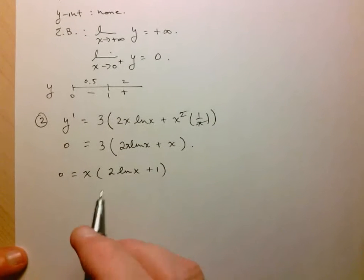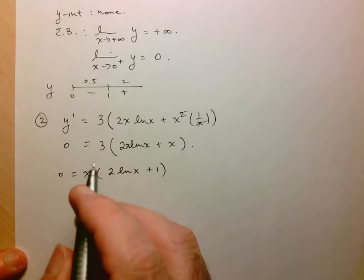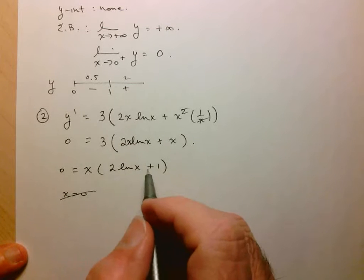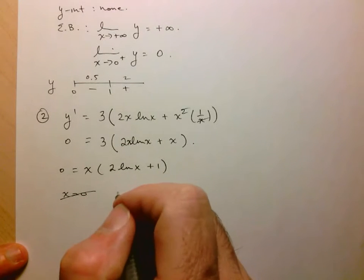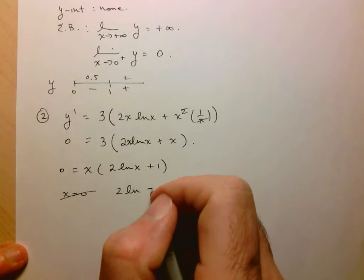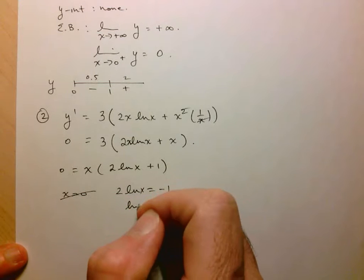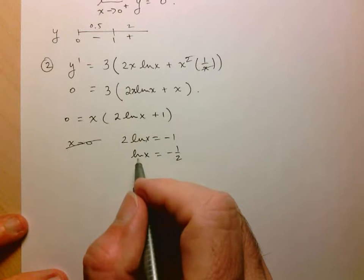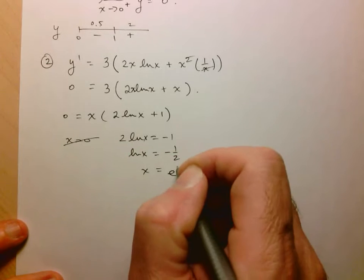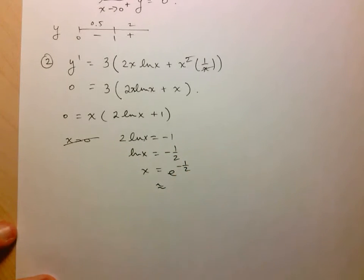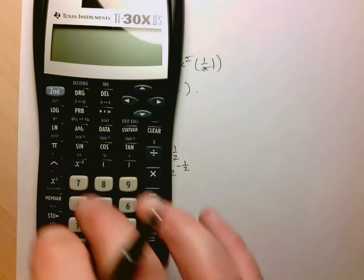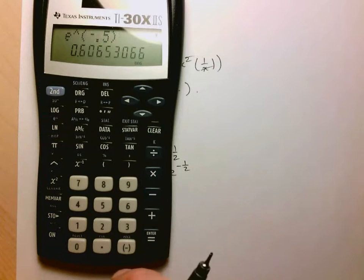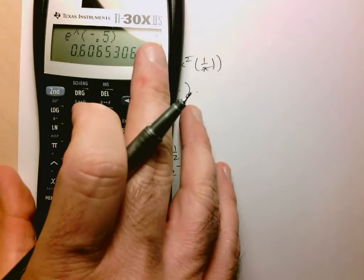Let's determine when the first derivative equals 0. We can factor out x to get x(2 lnx + 1). x equals 0 is not in the domain, so it's eliminated. Setting 2 lnx + 1 = 0 gives lnx = -1/2. The inverse of lnx is e^x, so x = e^(-1/2), which is approximately 0.6.